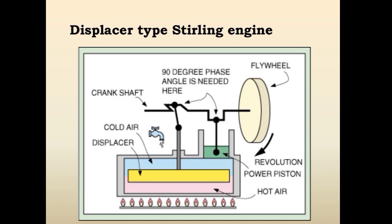The displacer type Stirling engine features the displacer, cold air, crankshaft, flywheel with revolution, power piston, and hot air in the inner part. A 90-degree phase angle is needed here as well.